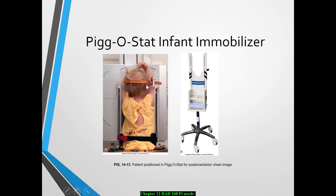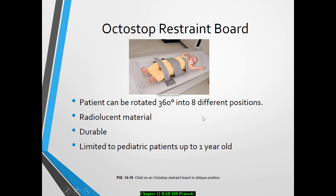Here's an example of the pigistat with the infant's arms raised above their head — we can do a chest x-ray and get them in a PA and lateral position this way. There's also a device called an octostop restraint board, which is wonderful especially for fluoroscopy exams. You can rotate your patient 360 degrees, place them in eight different positions, it's radiolucent, and it can generally be used with patients up to one year old depending on size.